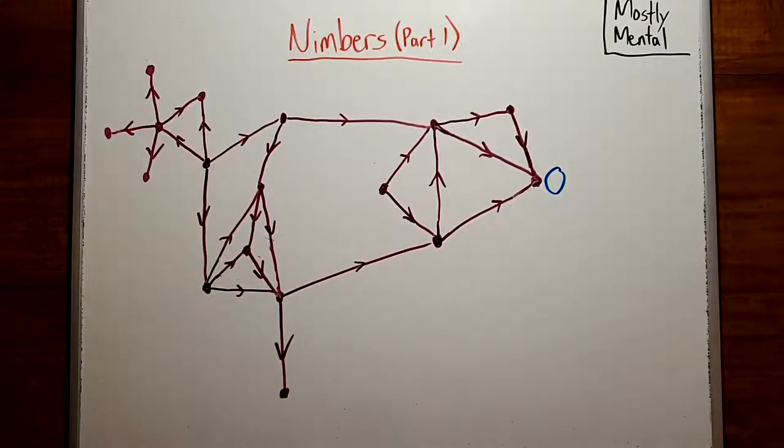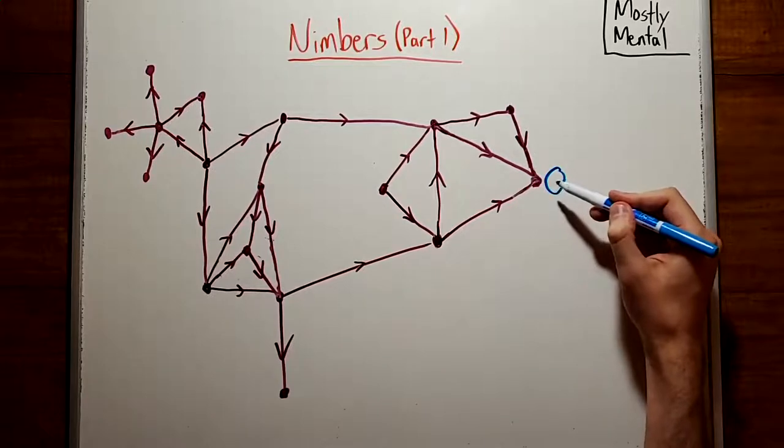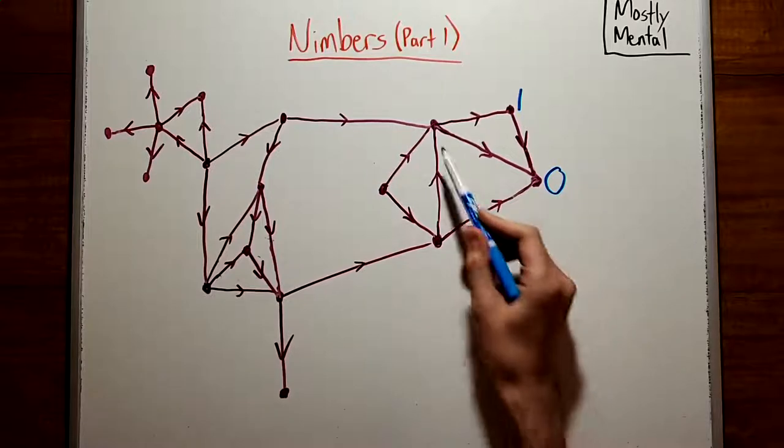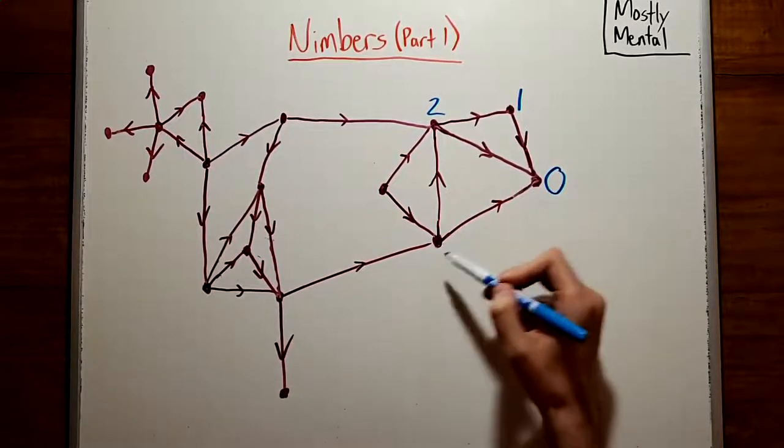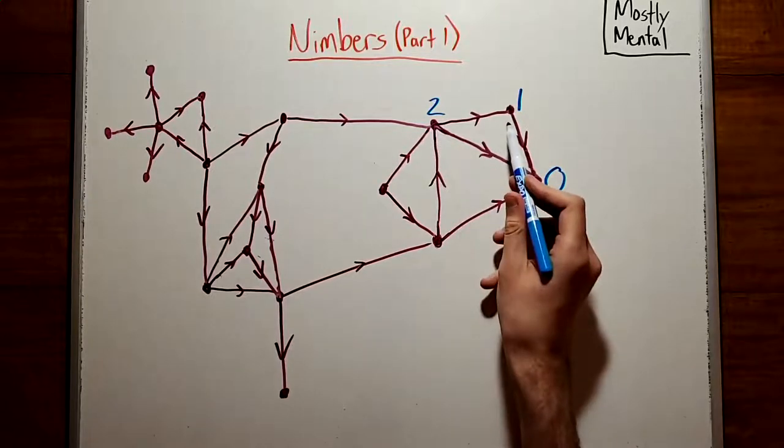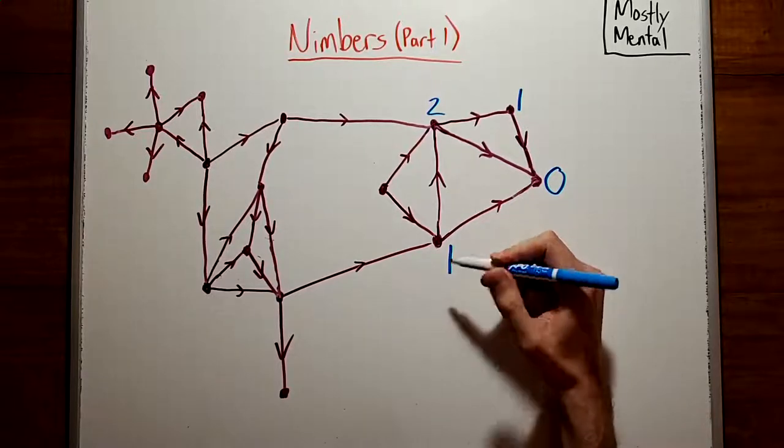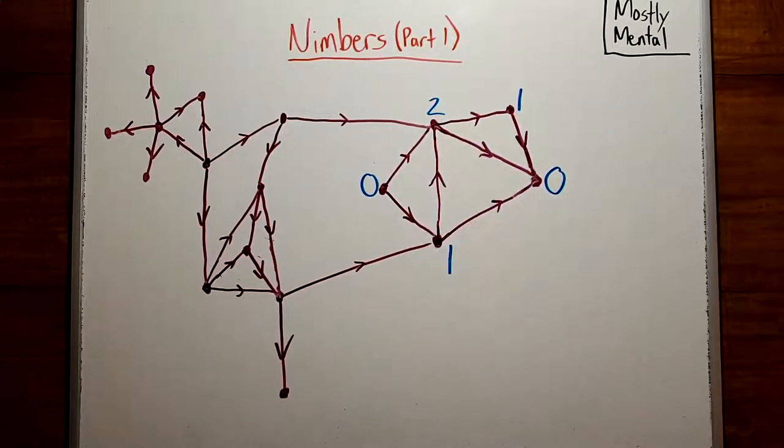And for every other position, we'll give it the smallest whole number that we can't reach in one move, the so-called minimum excluded value. So this position can't be a zero since we can reach zero in one move, so it has to be a one. And this one can reach zero and one, so it has to be a two. And this one can reach zero and two but not one, it would take two moves to get there, so this one must have value one. And this one can reach one and two, so it has value zero. And so on.